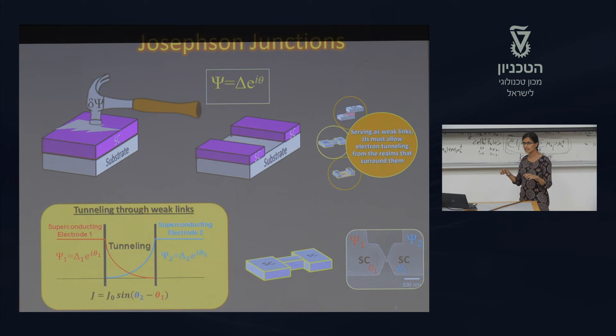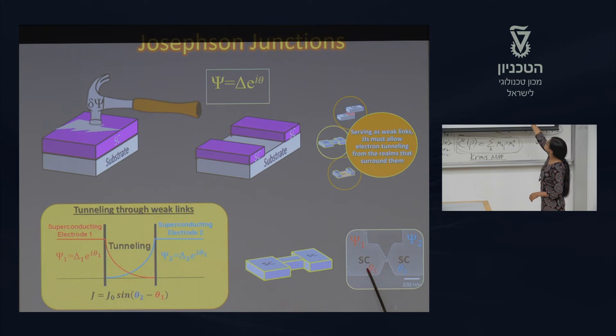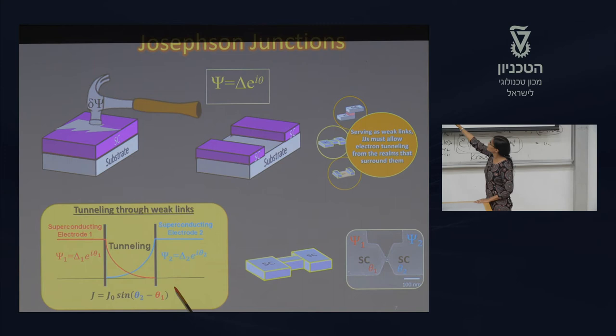This is one of the Josephson junctions fabricated in our lab. We have one superconducting material and another superconducting material, and by thinning the material between these two we achieve the Josephson junction. Because of this we have tunneling behavior between the two superconducting materials.